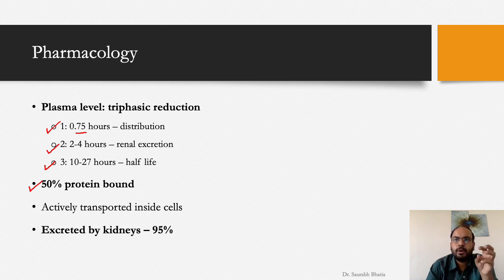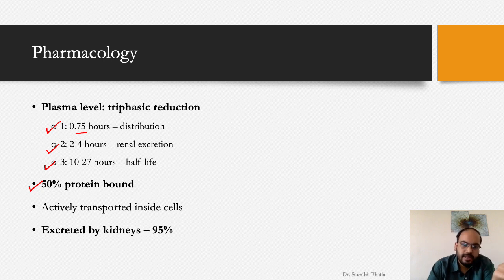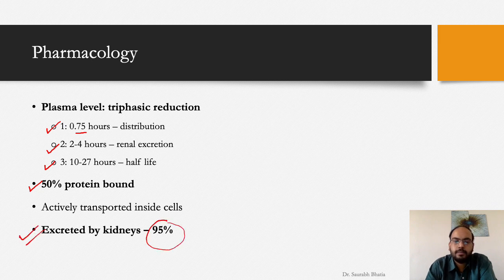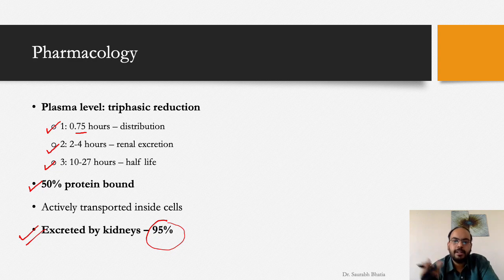The free component of any drug is the active component. If plasma proteins like albumin are low, there will be less protein-bound drug and more free drug, leading to more side effects. About 95% or more of methotrexate is excreted by the kidneys, so kidney function must be adequate, especially when using higher doses or in patients with renal impairment.